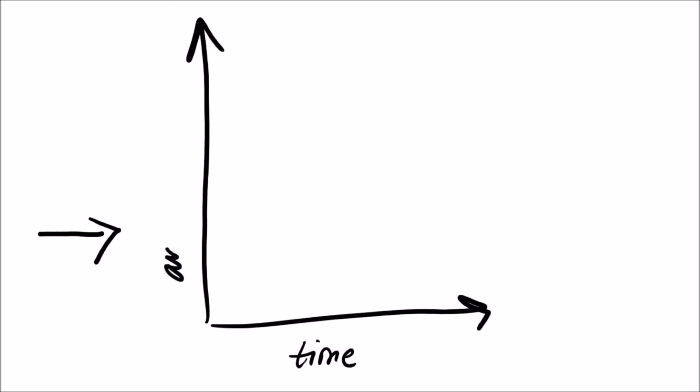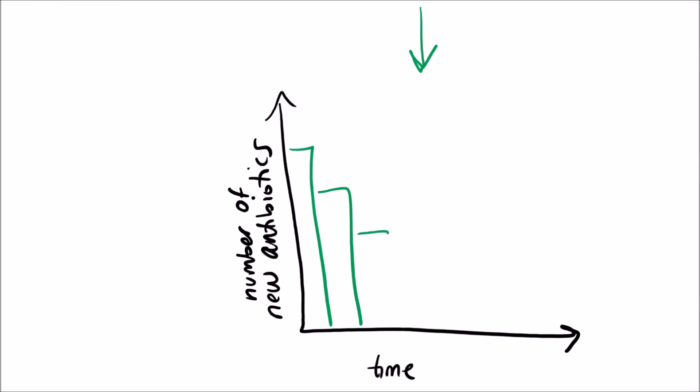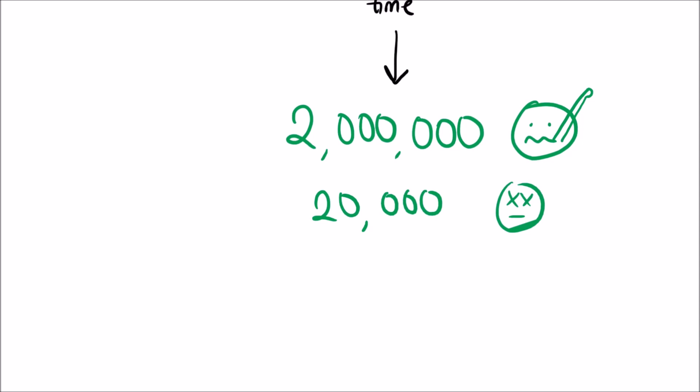Antibiotic resistance is on the rise. However, at the same time, the number of newly approved antibiotics per year is plummeting, leading to a dangerous situation in which 2 million people will suffer from these infections per year and 20,000 of them will die.